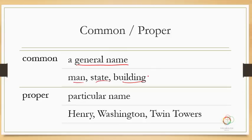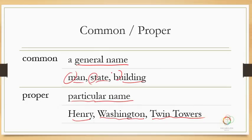If it's not common then it's proper. Proper means a particular name of something. So Henry is a particular name of a man. Washington may be the particular name for a state. Twin Towers is the name for a particular building. Notice common nouns are not capitalized, but all proper nouns need to be capitalized.